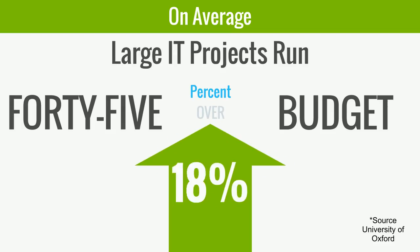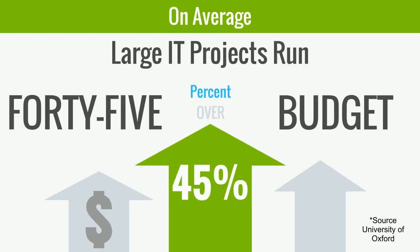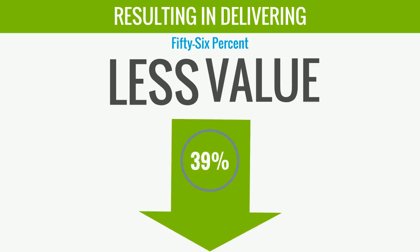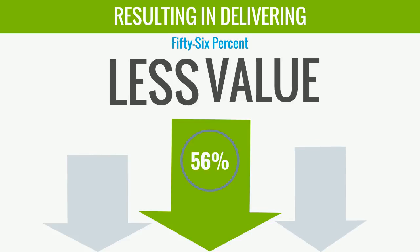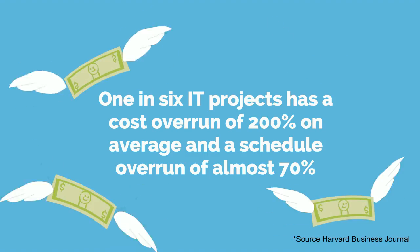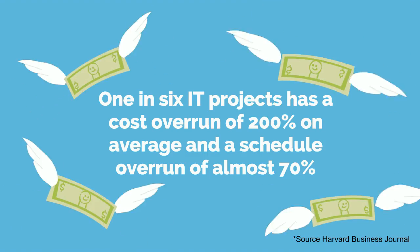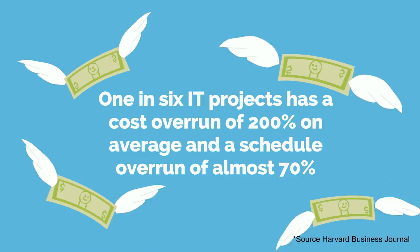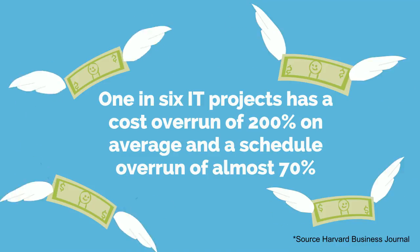On average, large IT projects run 45% over budget and 7% over time, resulting in delivering 56% less value. One in six IT projects has a cost overrun of 200% on average and a schedule overrun of almost 70%.